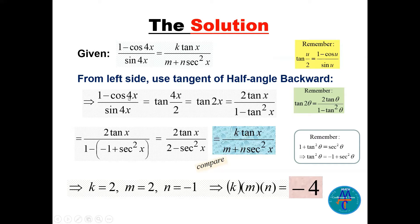half the angle 4x divided by 2, which is 2x. Now tan of 2x, we have another formula for double angle.